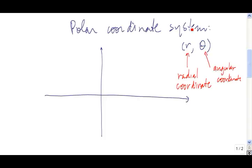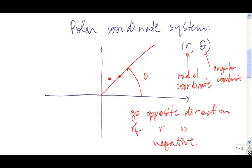We rotate through the angle theta. If theta is positive, we rotate in the counterclockwise direction. So we rotate through the angle theta, and then starting at the pole, we go out along the ray r units — in this direction if r is positive, and in the opposite direction if r is negative. So here, if this distance is r and this is the angle theta, this point in the polar coordinate system has label (r, theta).